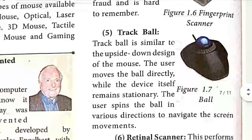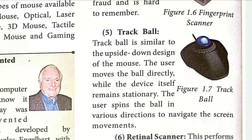Next is the trackball. It is an inverse of the mouse. When you move the mouse, the pointer on the display moves. But in a trackball, there is a ball in the center — when you move the ball, the pointer moves according to the movement of the ball, while the mouse device itself remains stationary and fixed on the table.